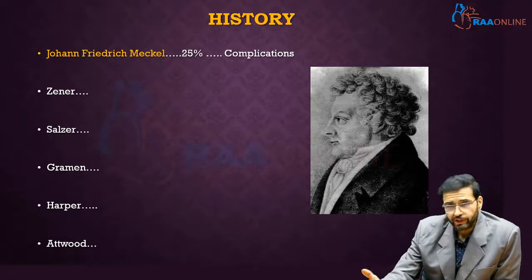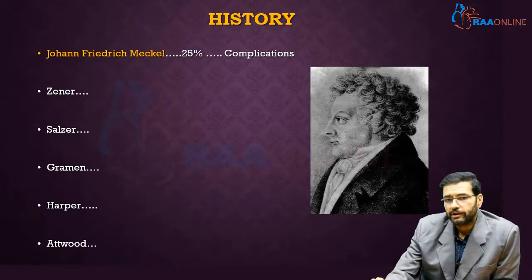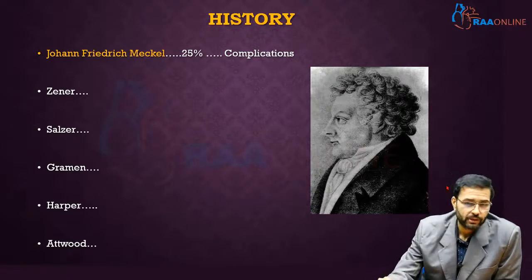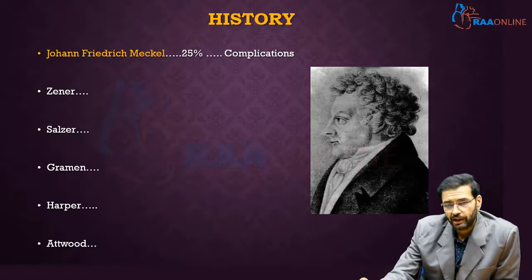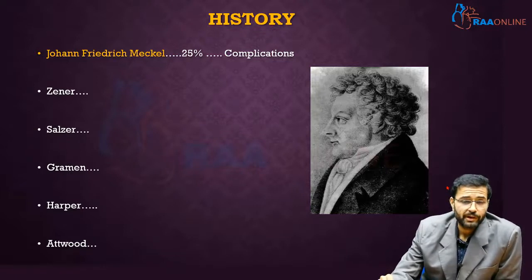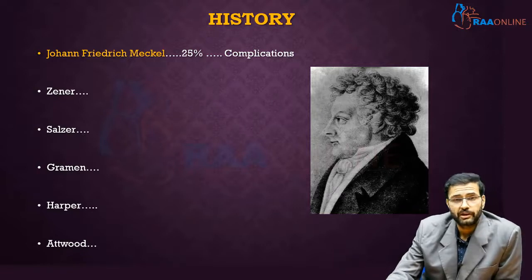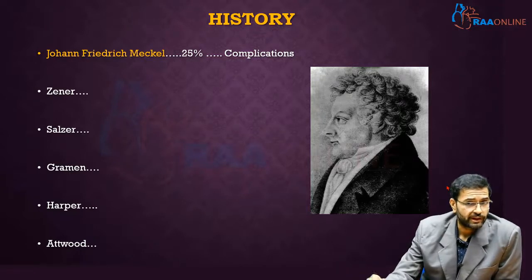It is interesting to note that John Frederick Meckel was not the first one to describe Meckel's diverticulum, but he was the one who described it in detail to such an extent that he came to a conclusion that Meckel's diverticulum has a complication rate of almost 25%, which is pretty high. Another important fact regarding John Frederick Meckel was that he was subsequently forced to go out of practice at the age of 50 because of paranoia and died in recluse two years later.